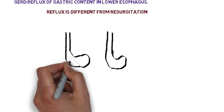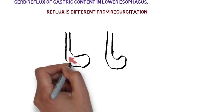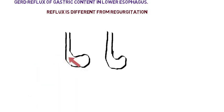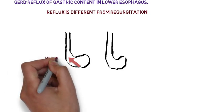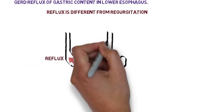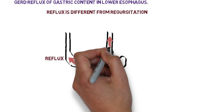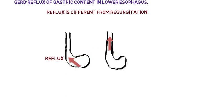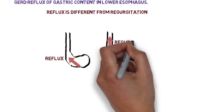In order to understand this, see in this diagram the stomach content goes up into the esophagus. This process is called reflux. While in this diagram the esophageal content goes into the trachea, this process is called regurgitation.